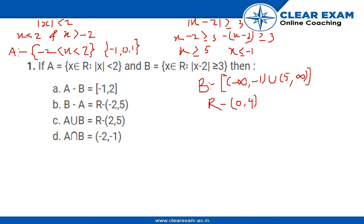The first question is: if A is such that x belongs to R such that mod x is less than 2, and B is equal to x belonging to R such that mod of x minus 2 is greater than or equal to 3, then we have to find all of these.